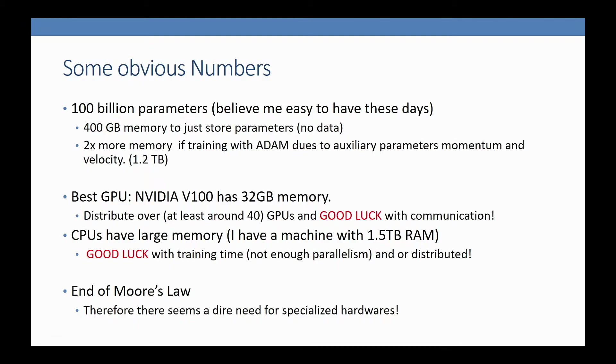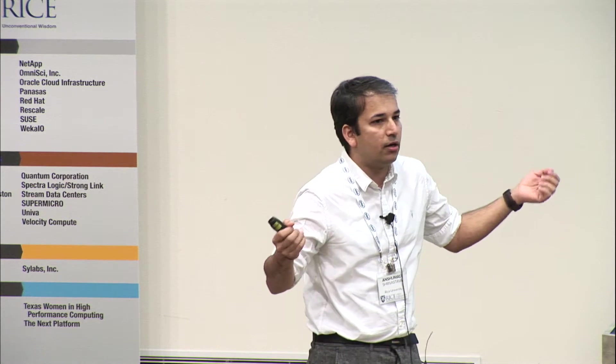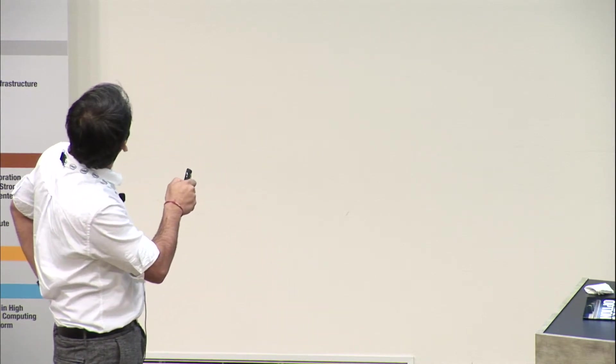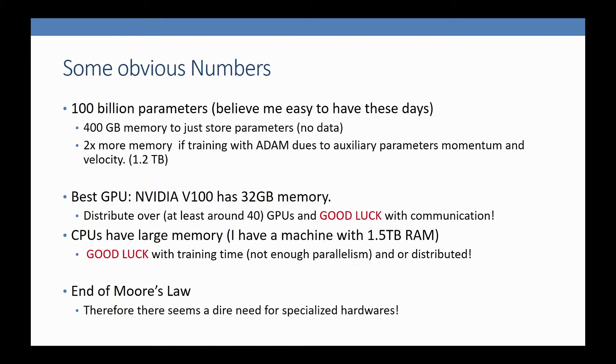Let's take a neural network with 100 billion parameters. It's really easy to justify this need. For example, in a recommendation system, I want to predict what products to show given an input. How many products are there? 50, 100 million? Any hidden layer—100 billion is not a big deal. That's 400 gigabytes memory just to store the parameters, forget about the data. If you're training with algorithms like Adam, you need two auxiliary parameters per parameter—momentum and velocity. You're looking at 1.2 terabytes of memory just to train this model without storing data.